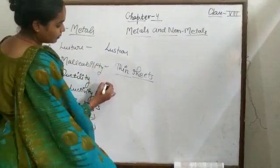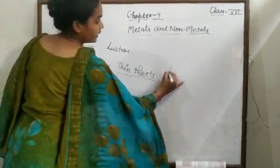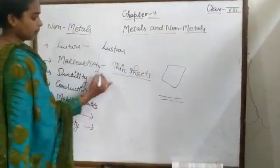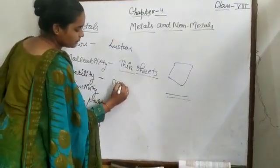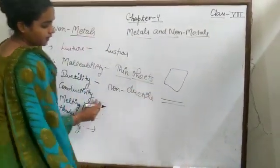Non-metals are non-ductile. They cannot be drawn into wires. Ductility means to form thin sheets and wire form. But this wire form is not converted. Non-ductile.